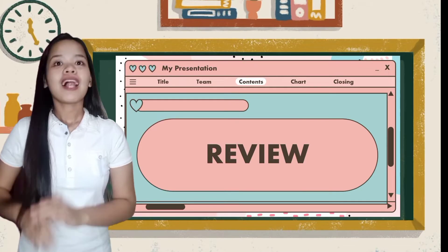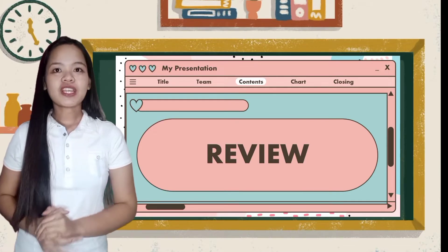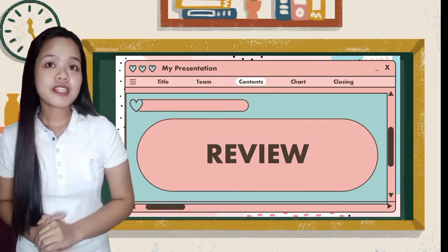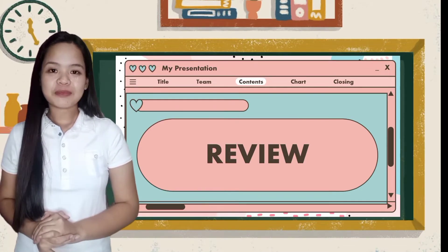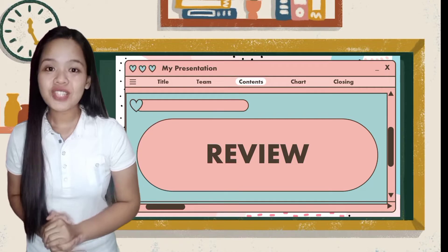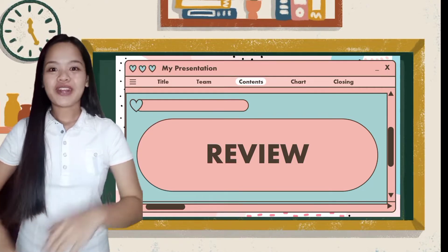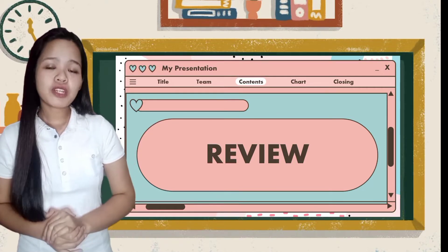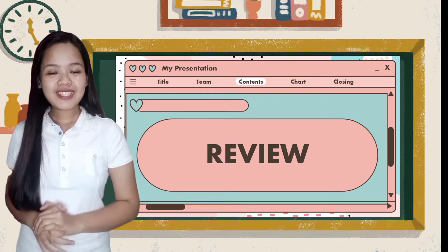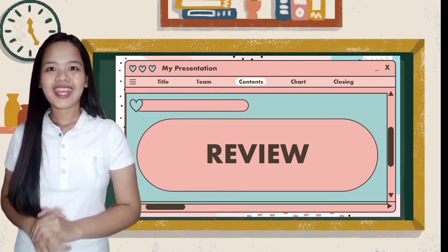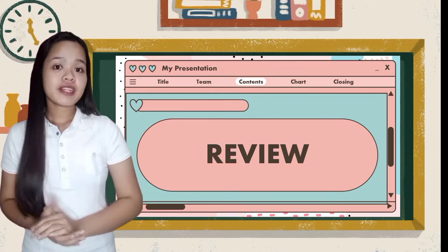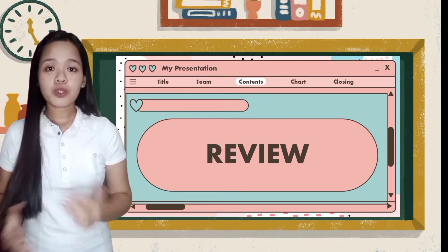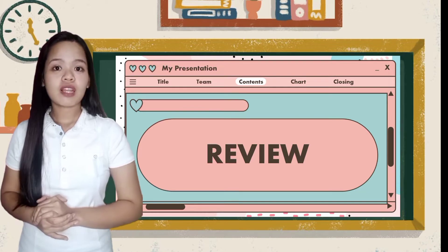Before we proceed to our new lesson, let's have a recall. Last meeting, we discussed the male and female reproductive system. Who can summarize? Very well said! How about the parts of the male and female reproductive system? Very good! Do you have any clarifications or questions about the last lesson?